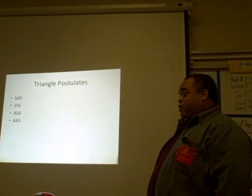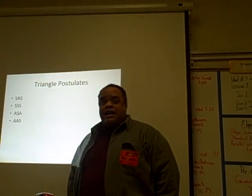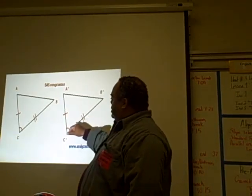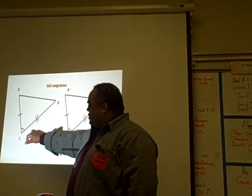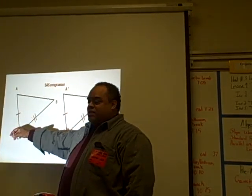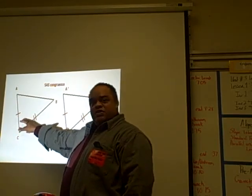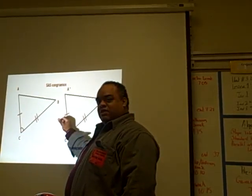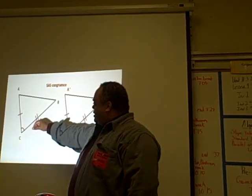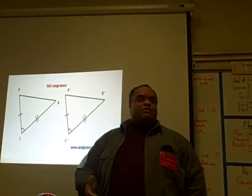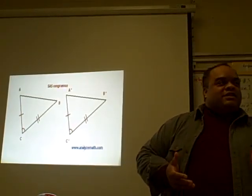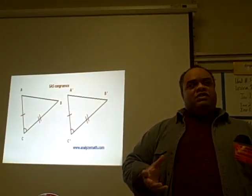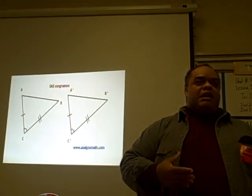The important thing is the order that they're in. Side, angle, side means you have two sides that are congruent, two angles, and then two more sides. The angle has to be on the inside of those two sides. So if you have two triangles where the first side is congruent, the middle angle is congruent, and the second side is congruent, then the triangles are congruent. Mathematicians got together and said: if two sides are congruent and the middle angle is congruent, then the whole triangle is congruent. They tested that theory and it became a postulate.